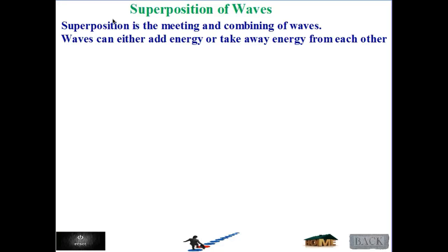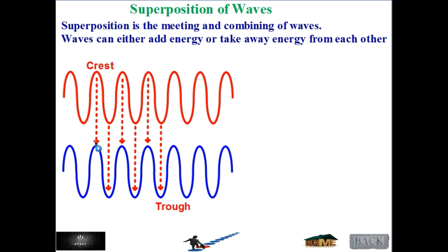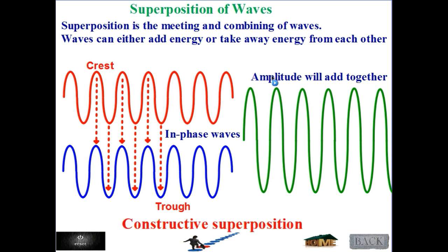Superposition of waves is the meeting and combining of waves. Waves can either add energy or take away energy from each other. If we have a wave intersect with another wave which have their crests at the same point and the trough at the same point — crest on crest or trough on trough — these waves are called in-phase waves, and they will add their amplitude. We call this constructive superposition.